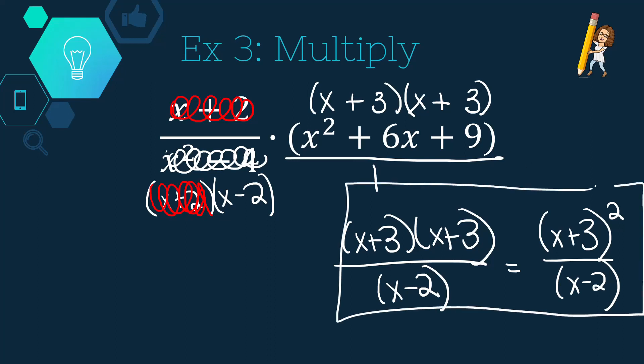I could also shorthand this and write x plus 3 quantity squared over x minus 2 for a final answer. Both of these would be acceptable, though, for an answer there. You don't need to foil the answer, and actually I would rather hope you don't, because it's going to take you a lot longer. And sometimes, a lot of times, when we get further in our academic studies of rational expressions and rational functions, you're not going to want to foil it once you get your final simplified answer.